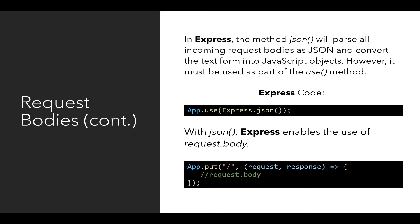We also have to use this lowercase json method as part of the use method on the created Express server. When app.use is combined with express.json passed as an argument, all routes then have access to request.body. However, because request.body can only be used with the P's — PUT, PATCH, and POST — we see an example at the bottom: app.put, listening for the path slash, where any incoming information expressed as a request body becomes part of the request.body object.